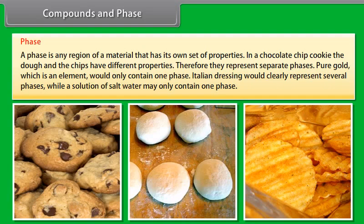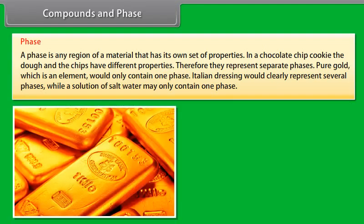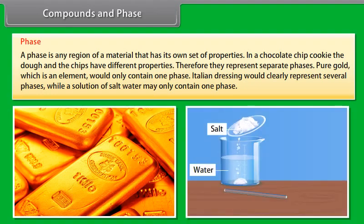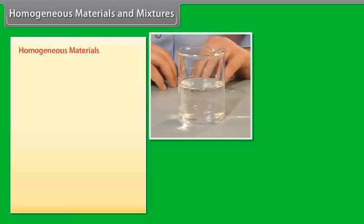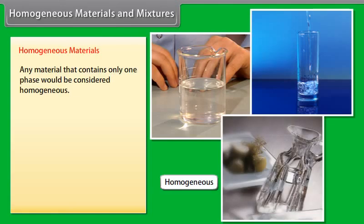Compounds are substances that are made up of more than one type of atom. Water, for example, is made up of hydrogen and oxygen atoms. Carbon dioxide is made up of carbon and oxygen atoms. Table salt is made up of sodium and chlorine. Compounds differ from mixtures in that they are chemically combined. Unlike elements, compounds can be decomposed or broken down by simple chemical reactions.